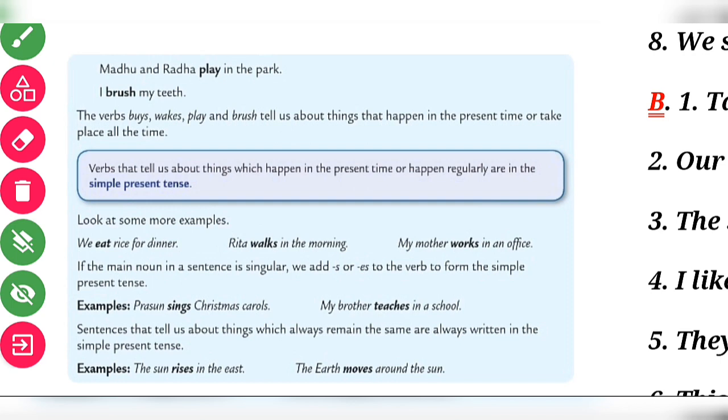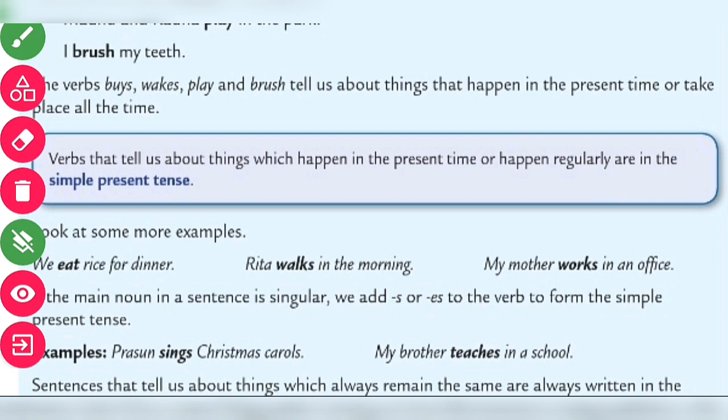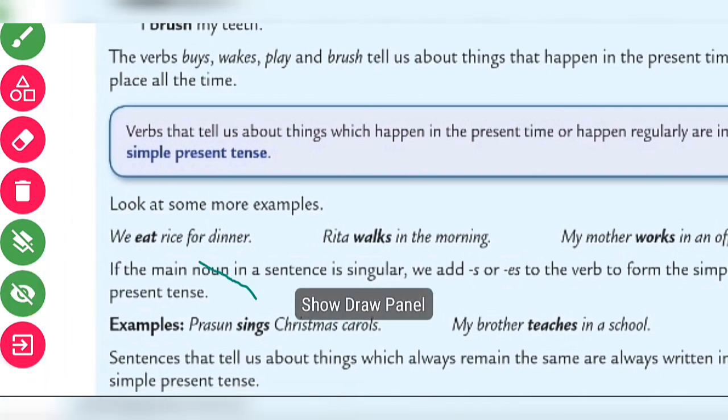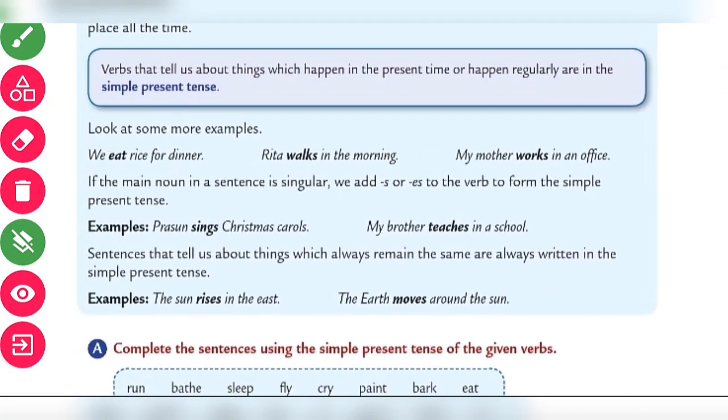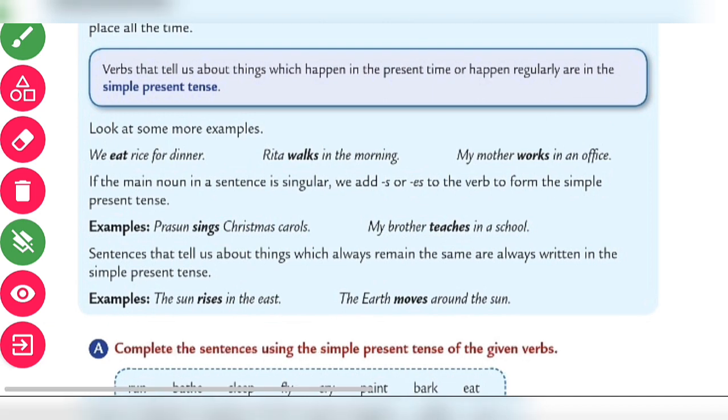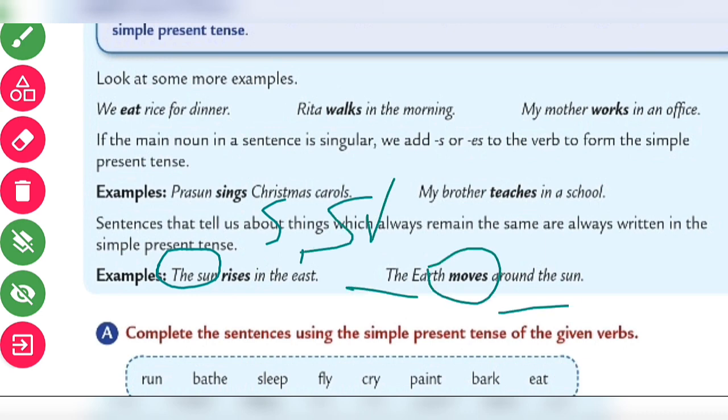The verbs buys, wakes, play and brush tell us about things that happen in the present time or take place all the time. Verbs that tell us something which happens in the present time or happen regularly are in simple present tense. If the main noun in the sentence is singular, we add s or es. If a sentence tells us about things which always remain the same, it's always written in the simple present tense. The sun rises - singular subject, singular verb. The Earth moves - singular subject, singular verb.